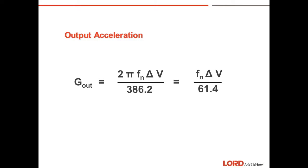Output acceleration: The acceleration level resulting from the occurrence of a shock incident to a spring-mass system or a free body is the output, or G's out, that we are looking for. This is calculated by taking your natural frequency times the change in velocity, divided by 61.4.